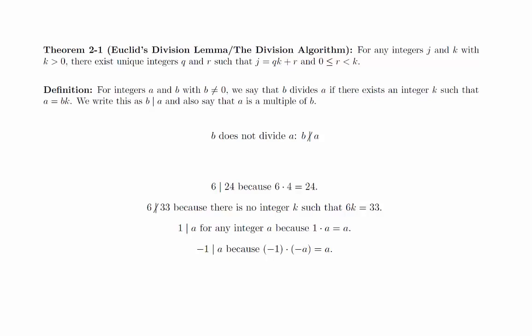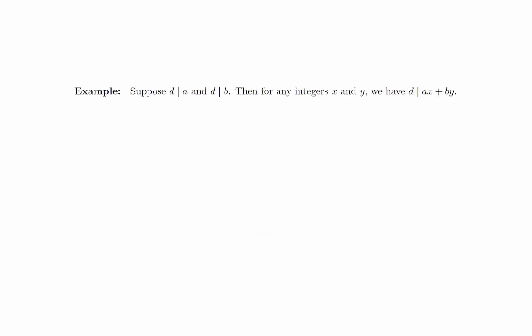To become more familiar with the definition, we will do a quick example proof. Suppose d divides a and d divides b. Then for any integers x and y, we have d divides ax plus by. The proof is simply a matter of applying the definition and doing a little bit of algebra. Since d divides both a and b, there are just integers j and k such that a equals d times j and b equals d times k. If we then substitute these into ax plus by, we find that we can write it as d times an integer. If d divides both a and b, we call d a common divisor of a and b.